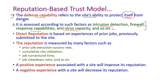The second one is direct reputation. It is based on the experience of prior jobs which were previously submitted to the site. These reputations are measured by: first, the prior jobs execution success rate; second, cumulative site utilization — how the site will be utilized; third, job turnaround time; and fourth, job slowdown ratio, and so on. Using these things we can measure the reputation ratio.